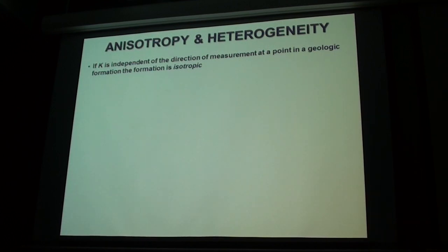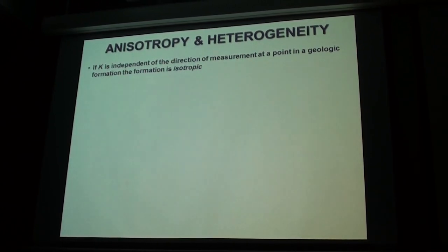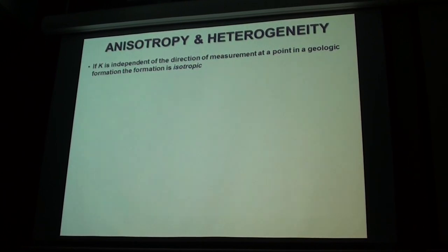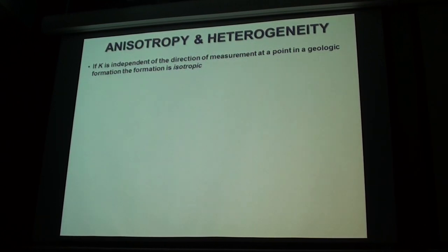There are four different scenarios you can have when dealing with these two qualities in an aquifer, and it's all about measuring hydraulic conductivity K at points. You can have an aquifer where you measure hydraulic conductivity at one point and it doesn't matter whether you measure it vertically, horizontally, or at an angle — it's the same. Then go to another point and do the same thing — that is a nice isotropic aquifer where K is the same in any direction. This virtually never happens.